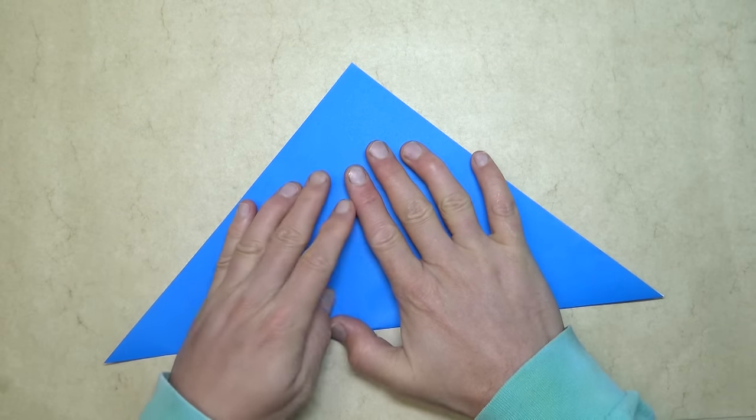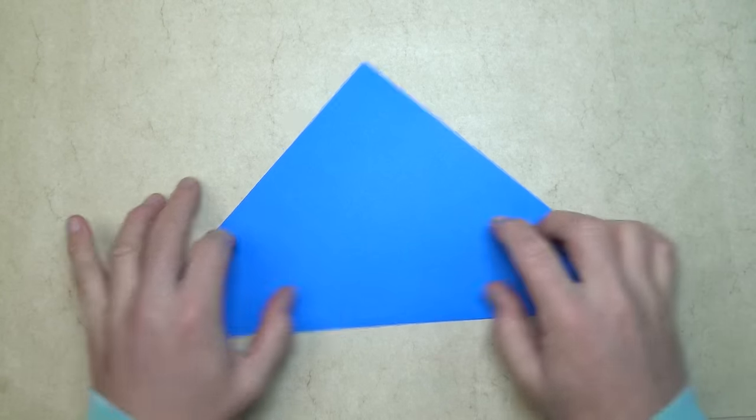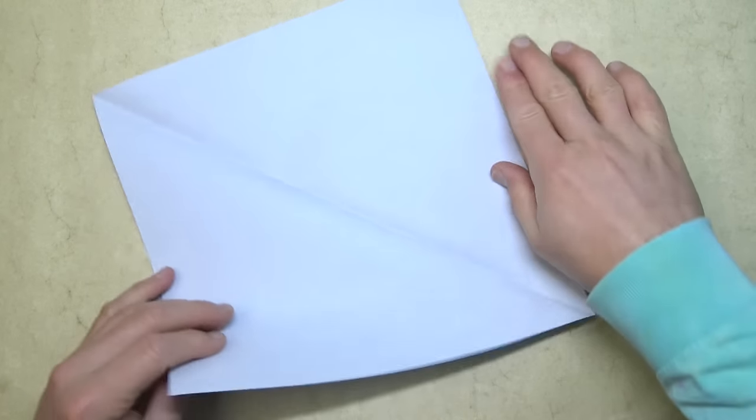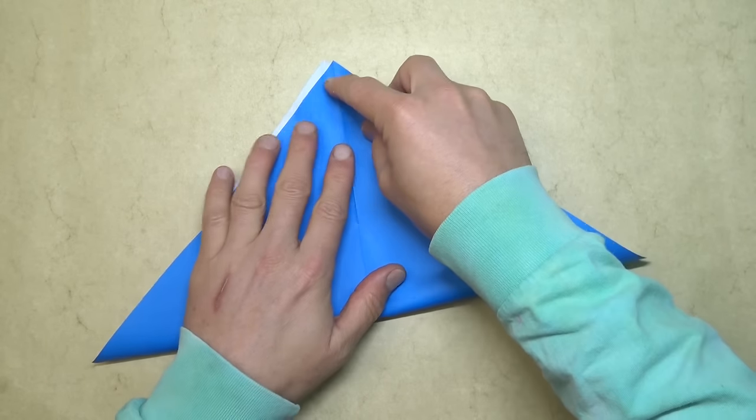We're making a waterbomb base, but I want to make it extra exact. So, we're going to make it slightly different. Alright, unfold, and rotate, and fold in half in this direction.